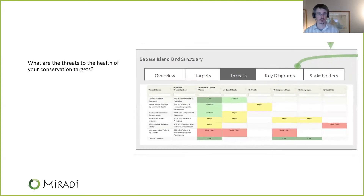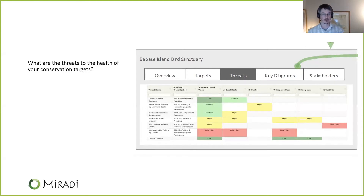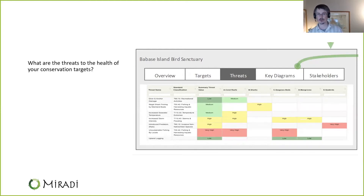The next tab starts to answer the question of what are the threats to the health of your conservation targets. This is a high-level view of targets mapped against their threats with their ratings — easy for a manager to understand and consume this information.